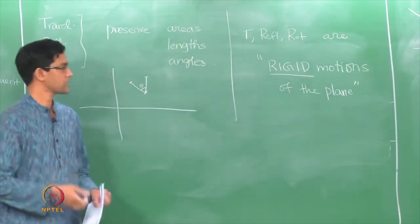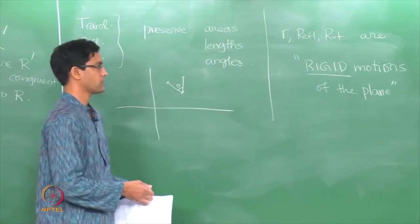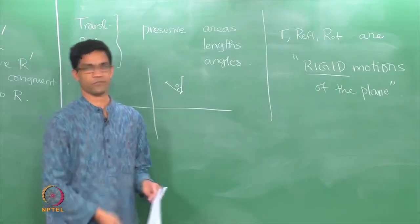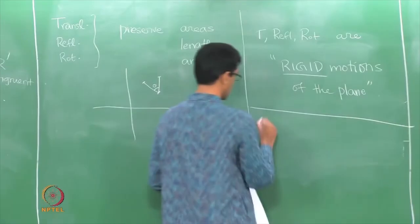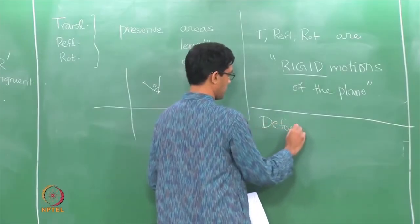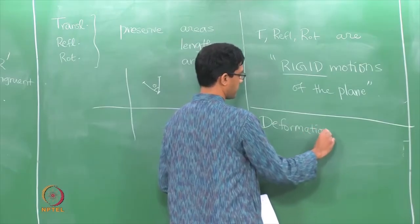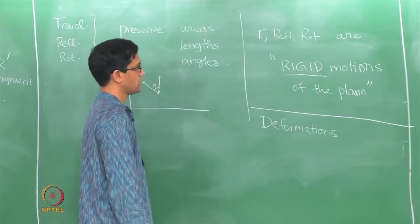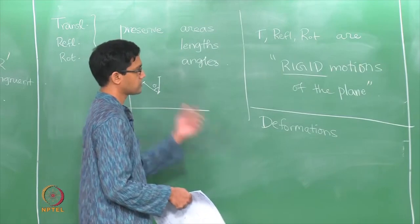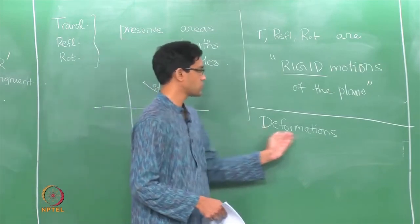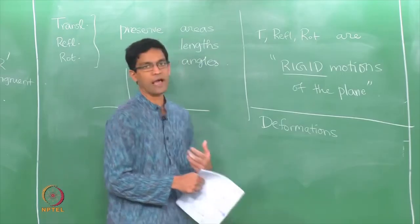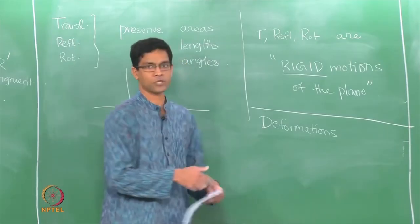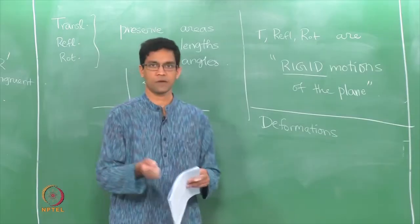What we will do next, during the next lecture, is to look at other examples. These are not the only interesting functions — what about maps which deform? This is to be contrasted with maps which are sometimes called deformations, meaning they deform lengths, angles, or areas. There are things called dilations and then more general linear transformations, but that will be for next time.